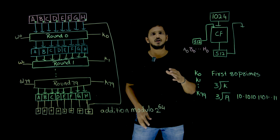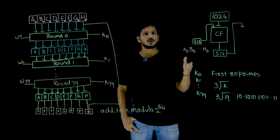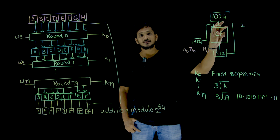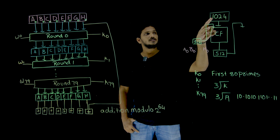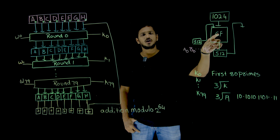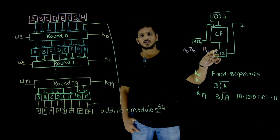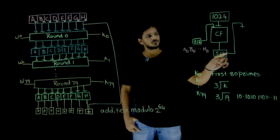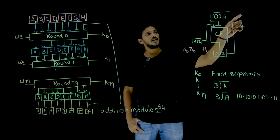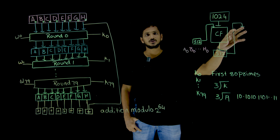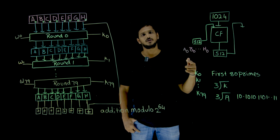Coming to today's class, SHA-512 is following an iterative method. What does iterative method mean? The entire message is divided into blocks of size 1024 bits. This 1024-bit block is given as input to the compression function, and the compression function will generate an output of 512 bits. This 512-bit output is given as input to the next compression function, along with the next 1024-bit message block. So this is what the iterative method means.